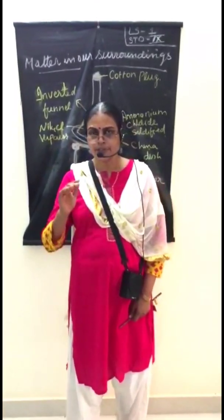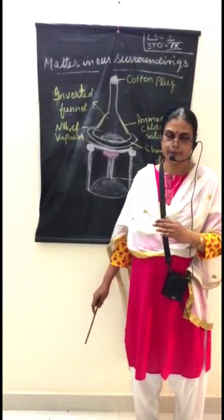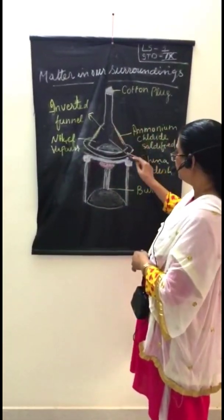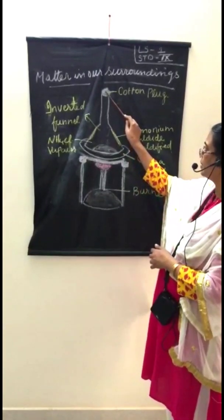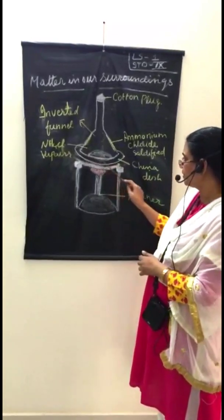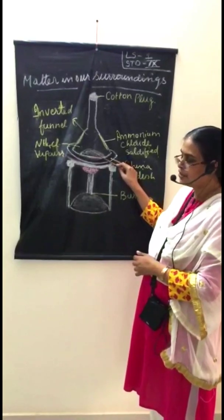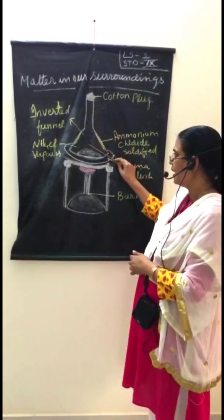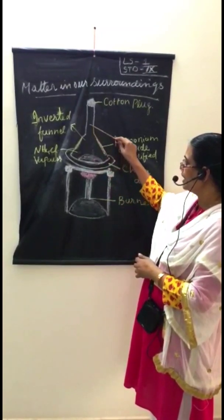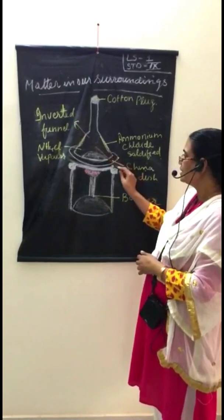There are certain substances which can directly convert into gas and vice versa. We will now discuss an experiment where a solid is directly changing into gas. You can see a funnel kept in the inverted position, with a cotton plug kept in the neck of the funnel. Ammonium chloride is taken in a china dish which is kept under this funnel and heated with the help of a burner. After some time, the solid changes into gas and the vapor starts moving up, then gets deposited on the sides of the funnel. So the solid first changes into gas, moves up, and then the gas converts back into solid and deposits on the sides of the funnel.